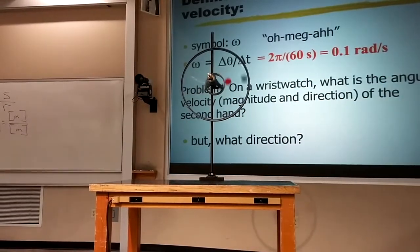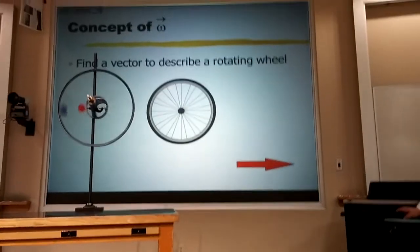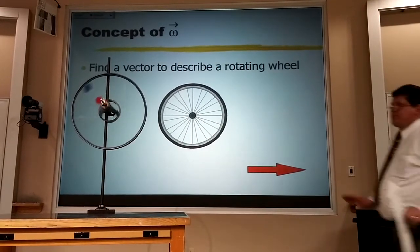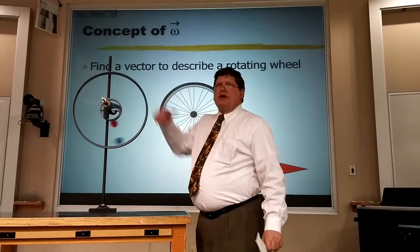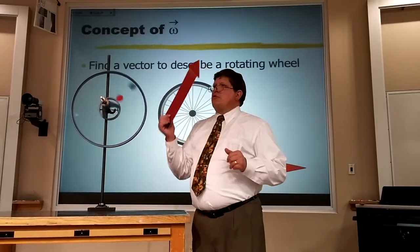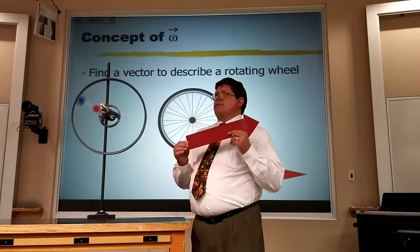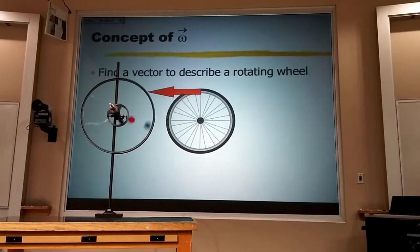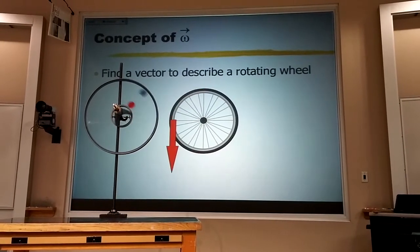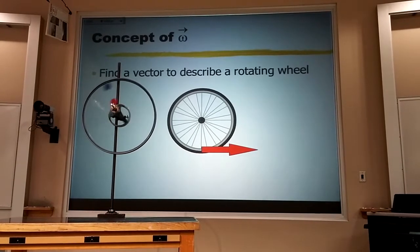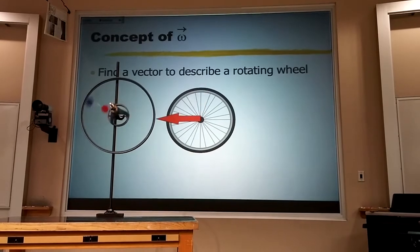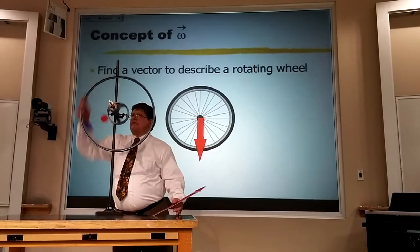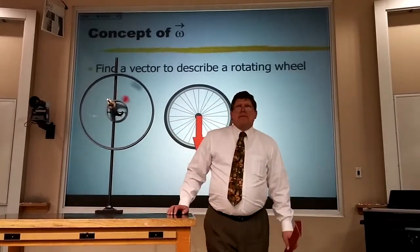Okay. The problem is that a vector cannot curve. I can't put a curved arrow and call it a vector. A vector only has one direction, and so it has to be straight. Now, if I try to use this vector to represent any part of the wheel, well, as the wheel turns, the direction is going to change. If I put it along the spokes, that direction is going to change. Every part of this wheel is changing direction as it goes round, except what?